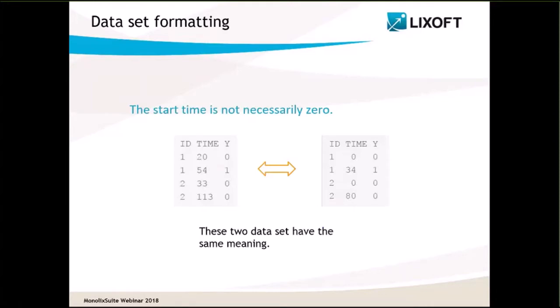Most of the time the start time is zero, but it can also be convenient to use another start time — for example, to indicate the day at which each patient enters the study — and each individual can have a different start time. Because Monolix takes into account the duration between start time and event, this dataset is actually equivalent to a dataset with start time of zero and the same duration between start time and event.